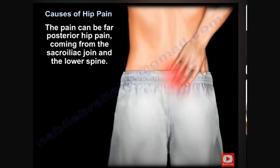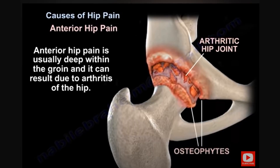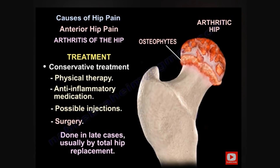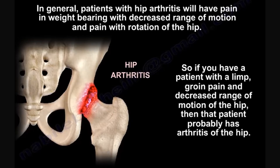Posterior hip pain almost appears to be located in the buttock. The pain can be far posterior, coming from the sacroiliac joint and the lower spine. Anterior hip pain is usually deep within the groin and can result from arthritis of the hip. Treatment is usually conservative first — anti-inflammatory medication, physiotherapy, and possible injections. Surgery is done in late cases, usually by total hip replacement. Patients with hip arthritis will have pain with weight bearing, decreased range of motion, and pain with rotation of the hip.